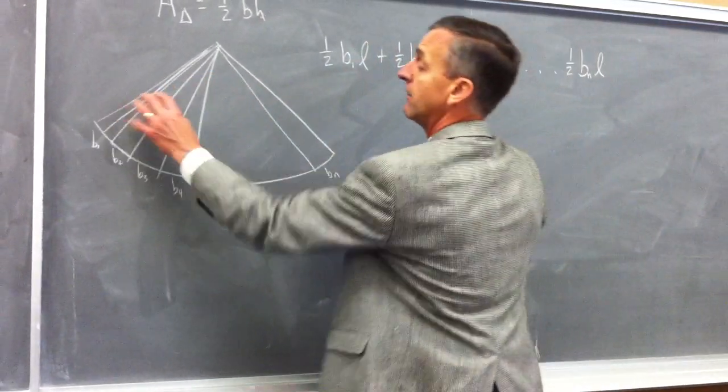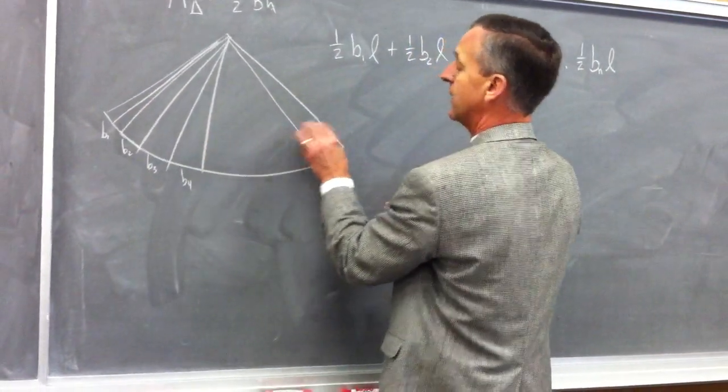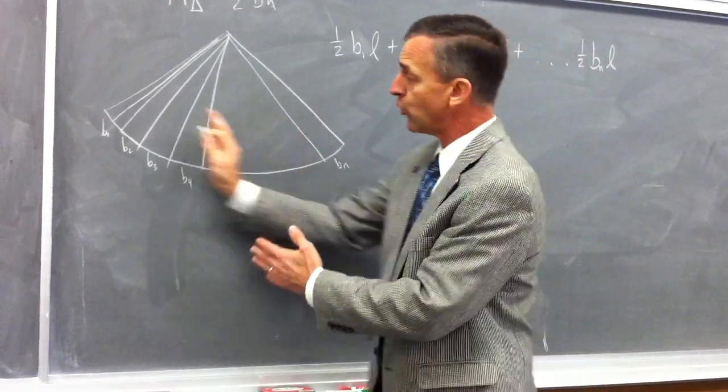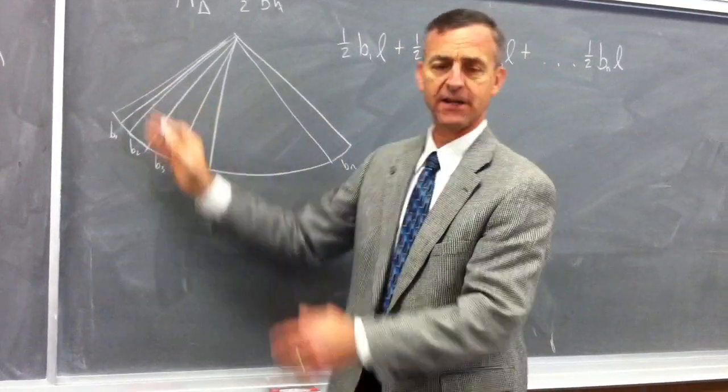Adding up all of these triangles all the way across will give us the total lateral surface area of the cone.